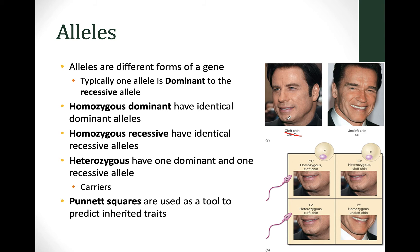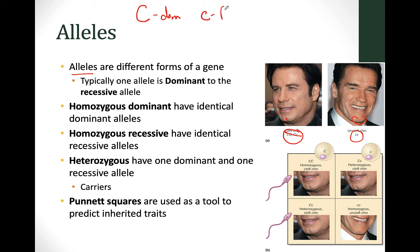In our example, we've got the cleft chin, which has that little indent in it, and then the uncleft chin where there's no indent. This is a genetically determined trait — that physical expression is made by proteins that develop and form that structure. The genetic component that determines whether you have a cleft chin or not is the alleles. In this example, big C is the dominant allele and little c is recessive.